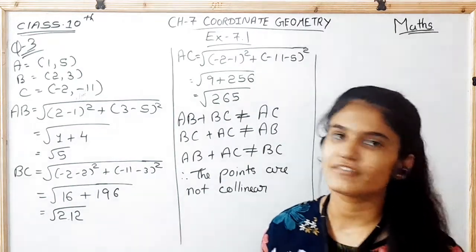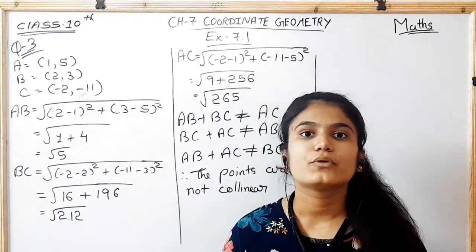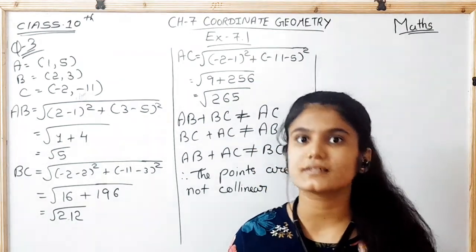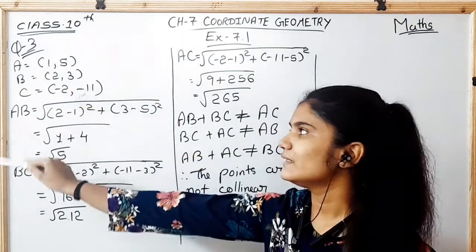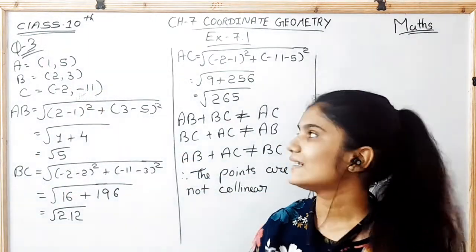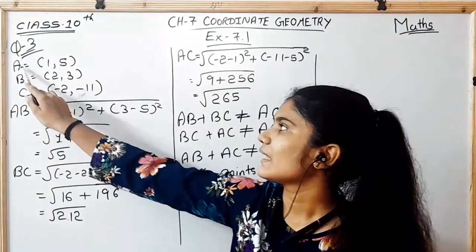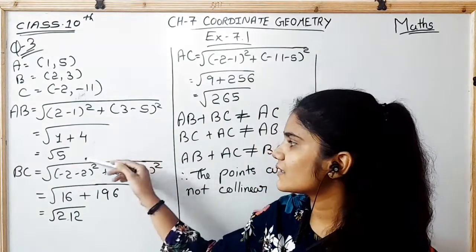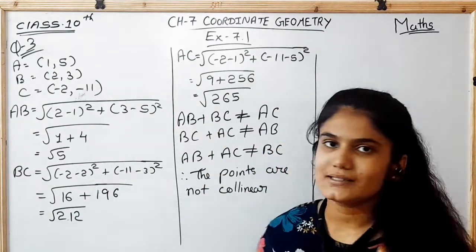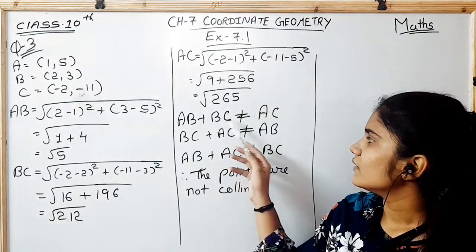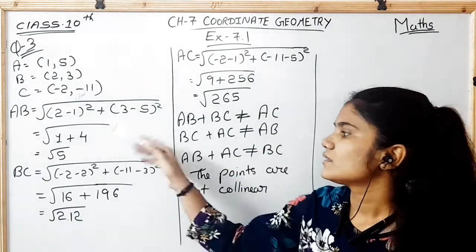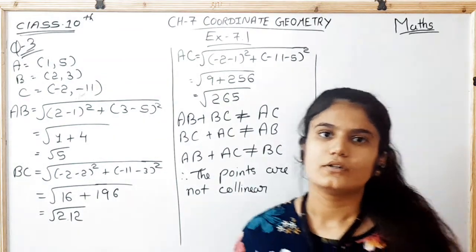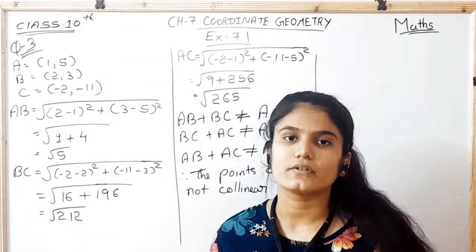In question number 3, we have to check whether the given points are collinear or not. For that, we have to prove that the sum of any two sides is not equal to the third side. We will find the distance between all three pairs of points — AB, BC, and AC — using the distance formula, and then prove that the sum of two sides is not equal to the third.